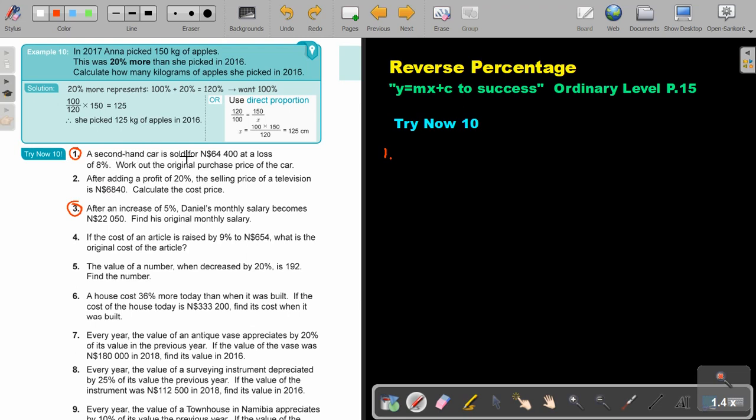So a secondhand car is sold for 64,400 at a loss of 8%. Now this is very important. A loss of 8%. So it's actually 100, not add, but loss means subtract. So it's actually 92%. So again, if I want the 100, I put the full amount over 92 and I multiply it with the price of the car. And that's 64,400. Because remember, cars become less. They don't grow. And if I do that, I will get on the dot, I'm going to get 70,000.